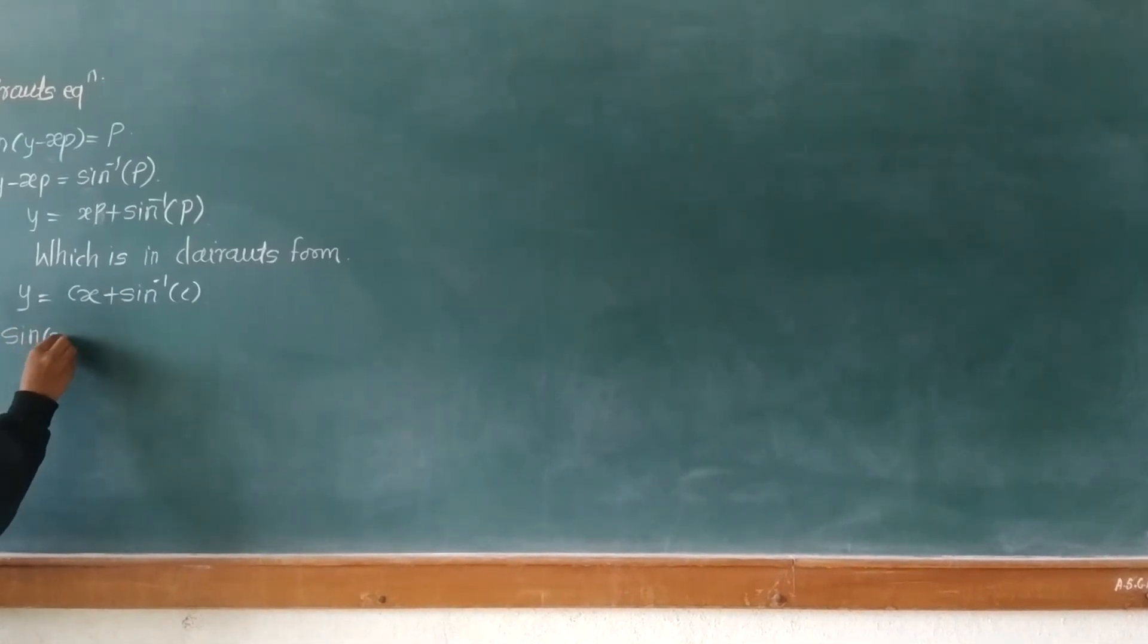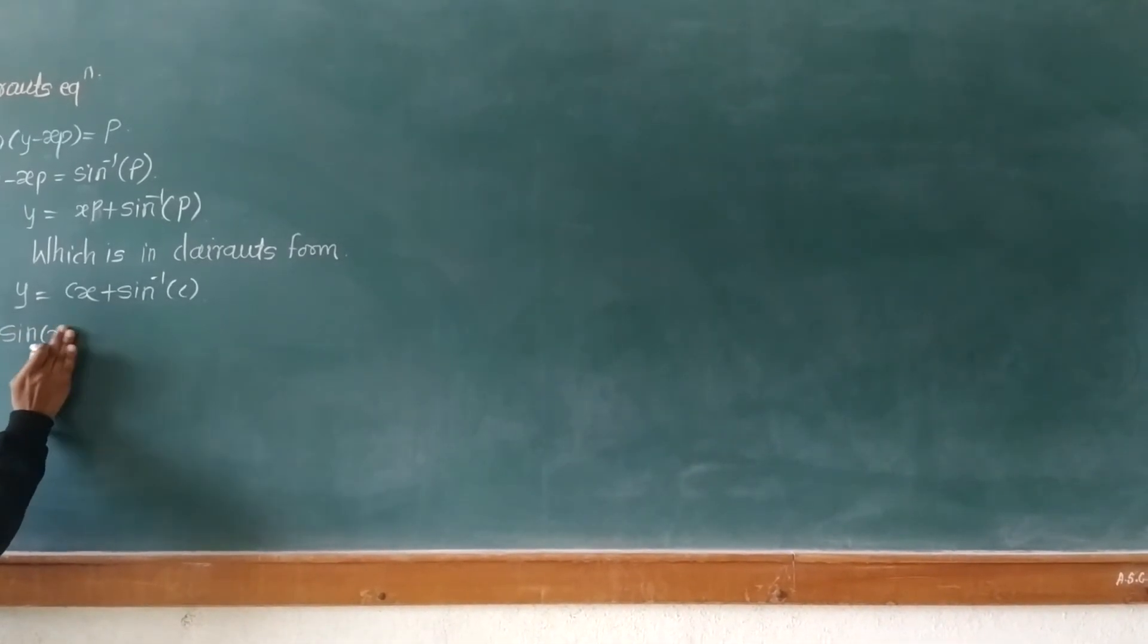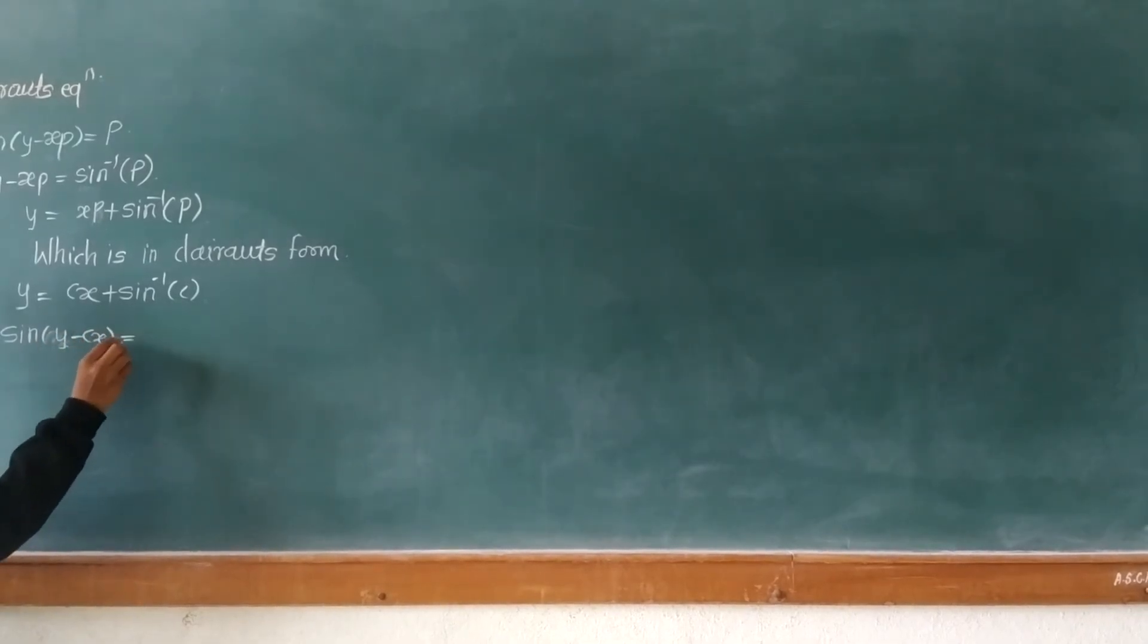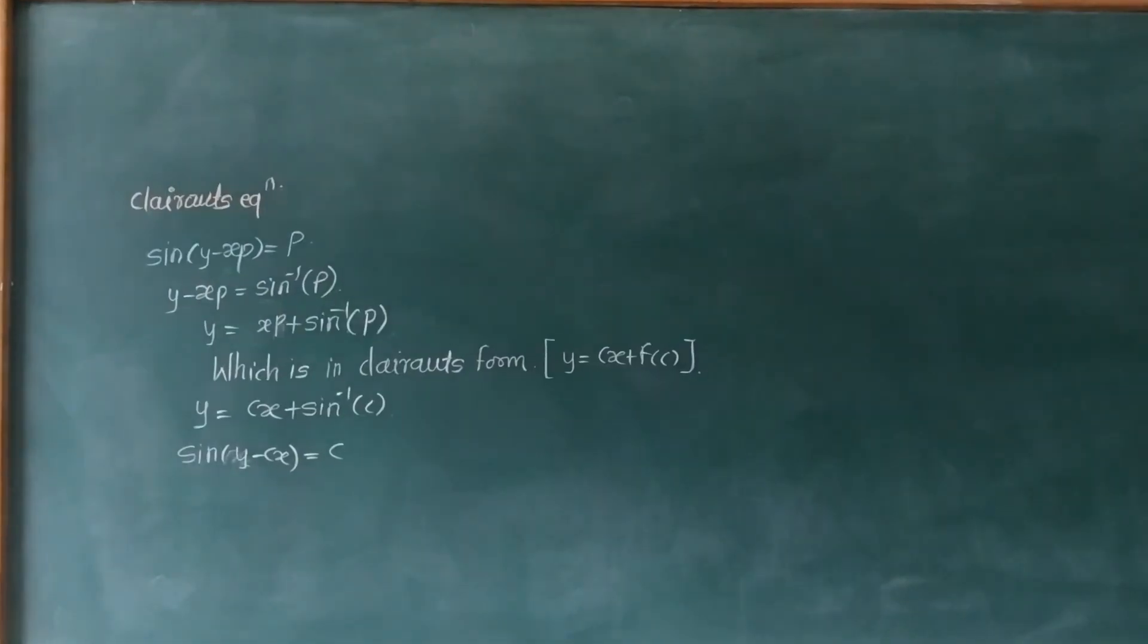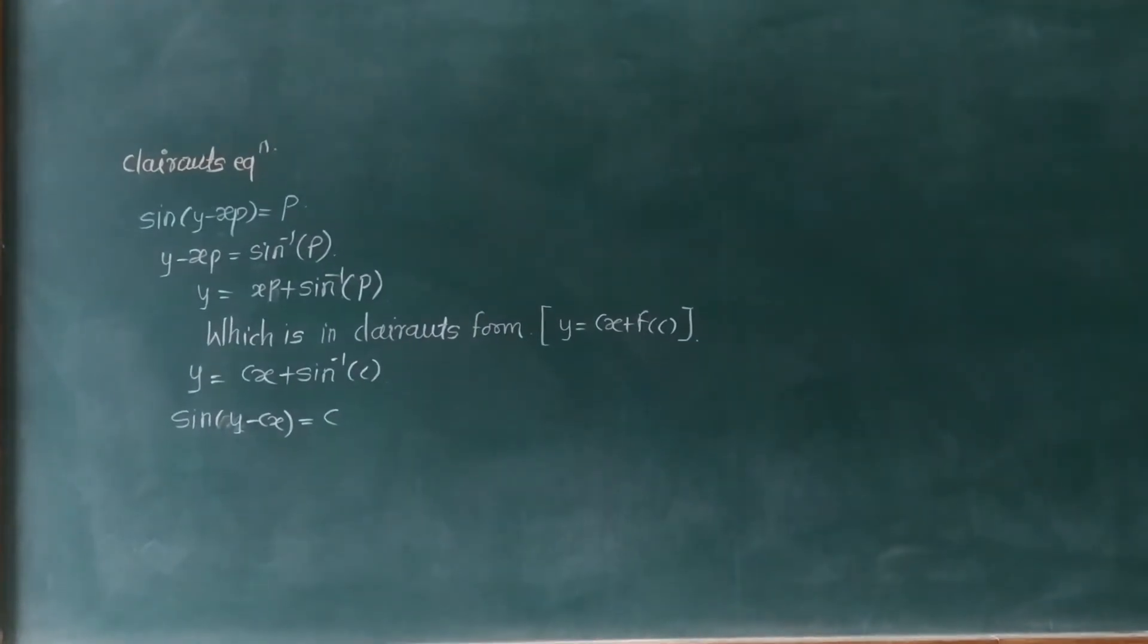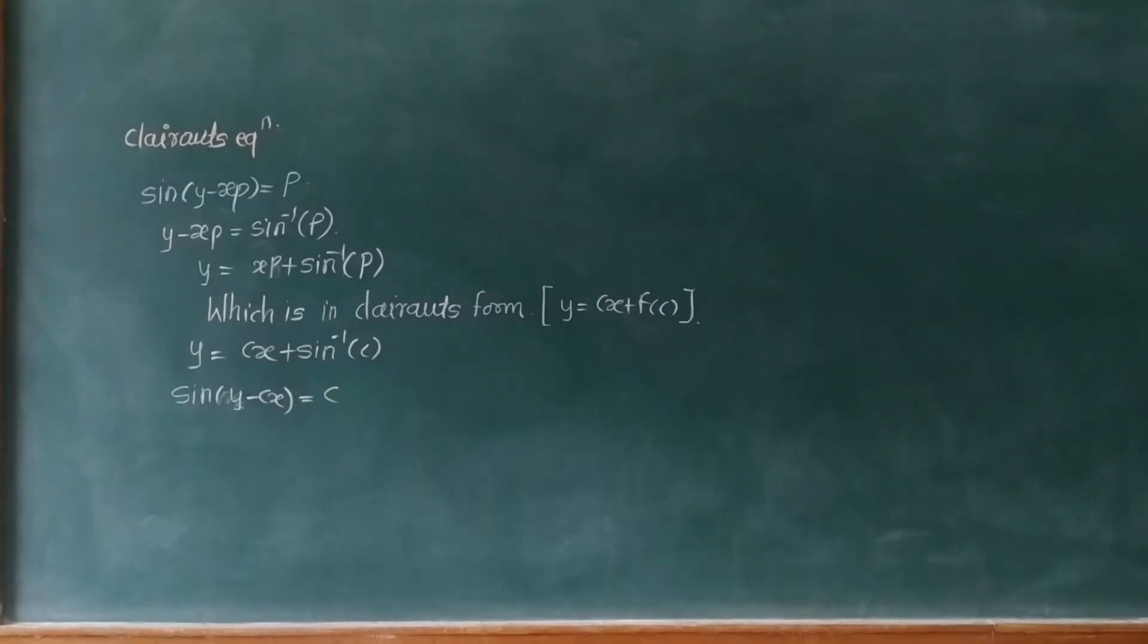And our solution is sine of y minus cx equals c. Sine of y minus cx equals c is the general solution of the equation sine of y minus xp equals p.